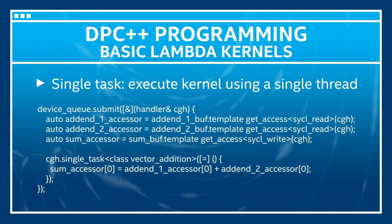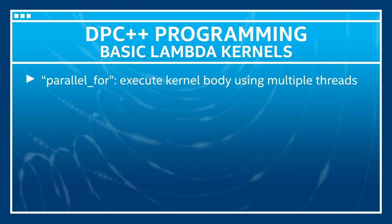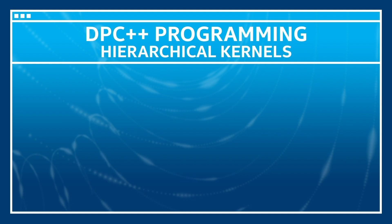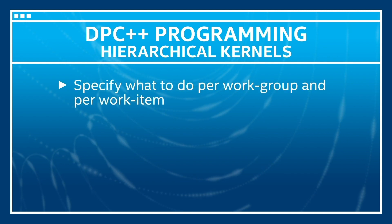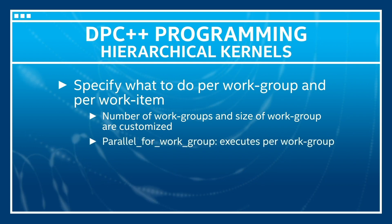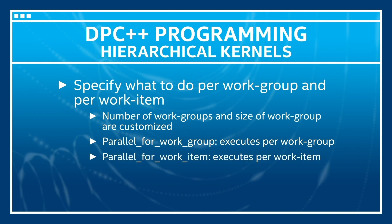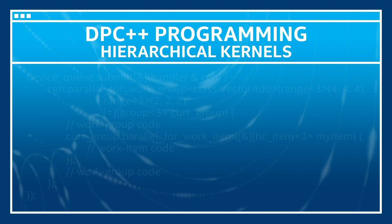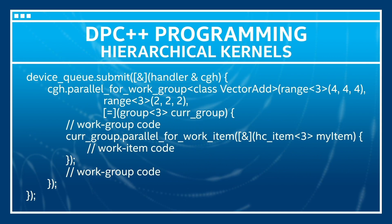Next is basic lambda kernels. A single task executes the kernel using a single thread on the device. On the other hand, parallel-for executes the kernel body using multiple threads on the device. There are multiple overloads of parallel-for in DPC++. Hierarchical kernels are used to specify what to do per work group and per work item. The number of and size per work group are customized. The kernel code within parallel-for work group is executed per work group and the code within parallel-for work item is executed per work item. There's also an implicit barrier after each parallel-for work item. Here is an example of a hierarchical kernel that uses 64 work groups of 8 work items each.